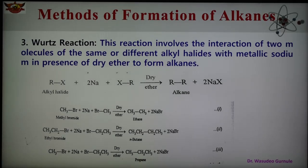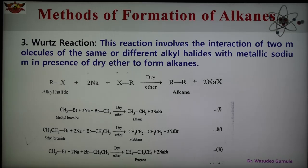In the Wurtz reaction, the reactivity order of different alkyl halides is: iodide > bromide > chloride. Alkyl fluorides do not react. This method is quite convenient for the preparation of symmetrical alkanes — that is, alkanes containing an even number of carbon atoms, like ethane and n-butane. It is not suitable for unsymmetrical alkanes with an odd number of carbons, such as propane or n-pentane.